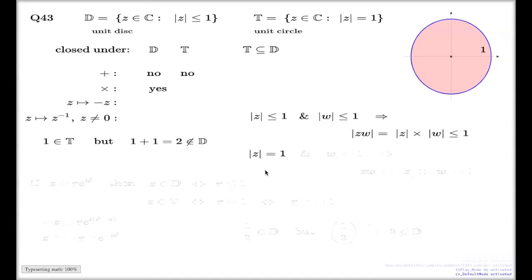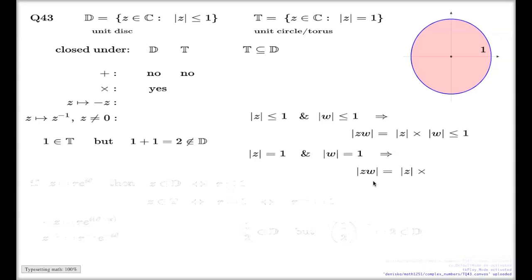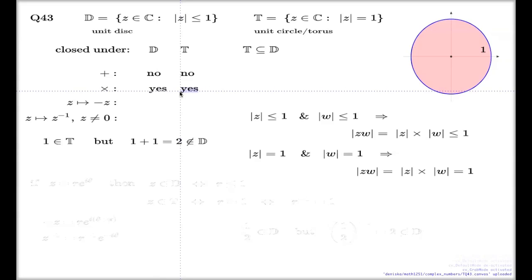You can use the same identity for the unit circle — sometimes this object is also called the Torus, and that's the reason the letter T is used. If you have two complex numbers which are exactly one in absolute value, by the same identity you will see that the absolute value of the product ZW is one as well. That's why we have the answer yes for T as well.